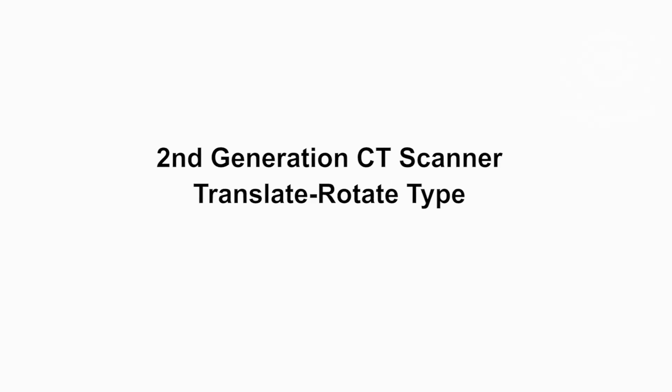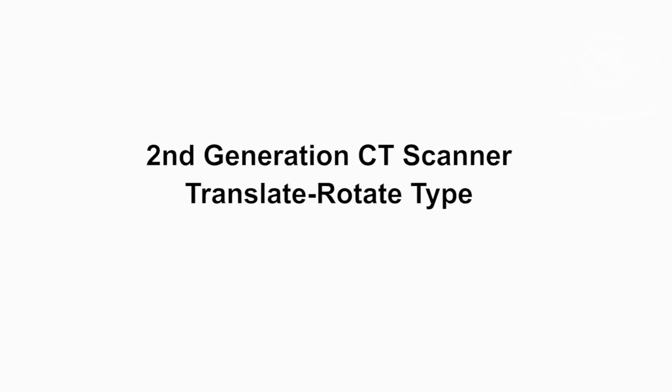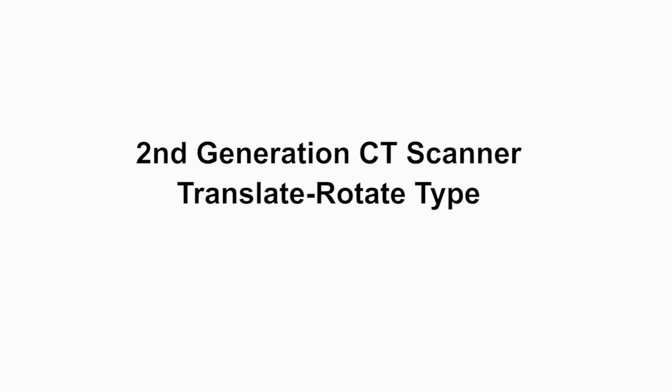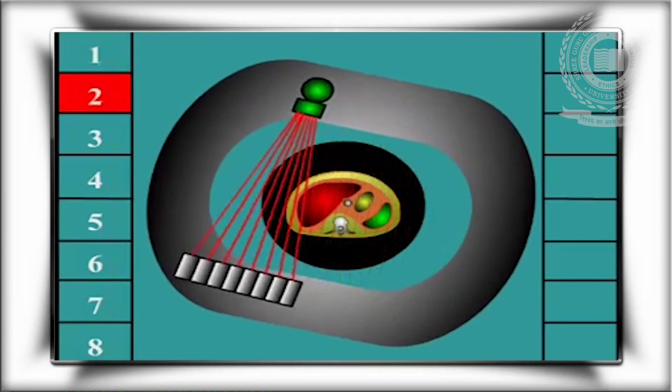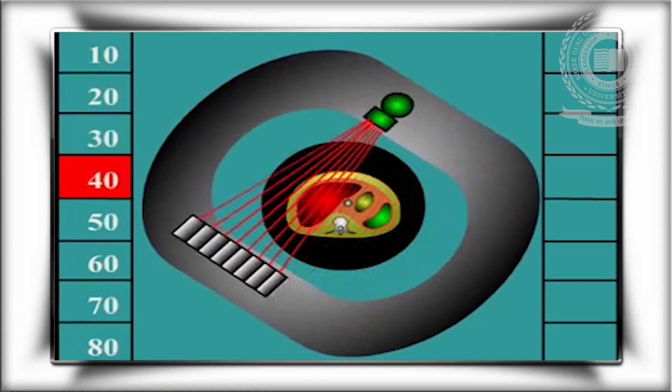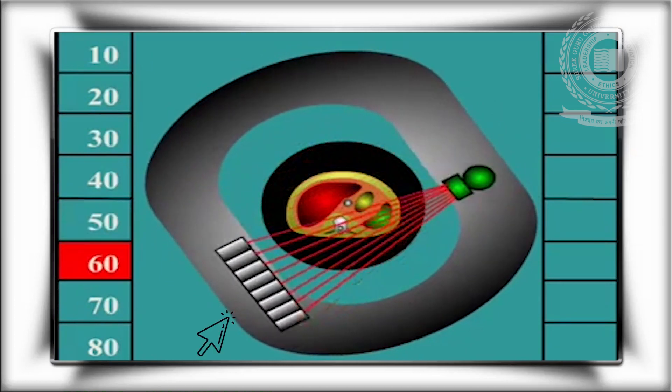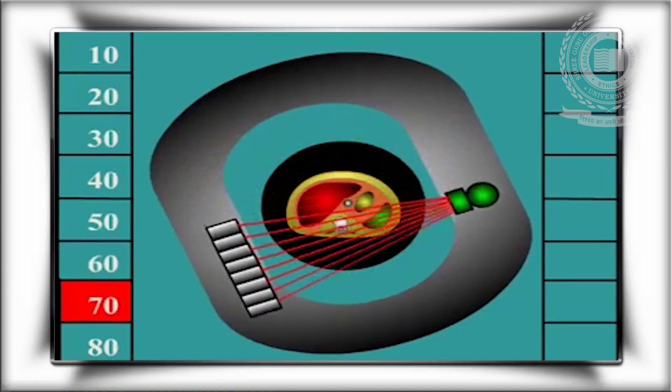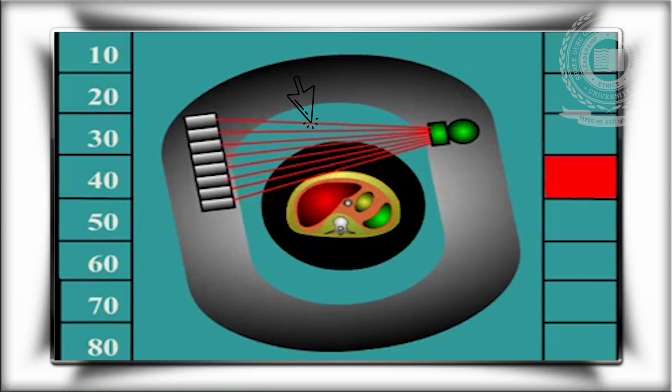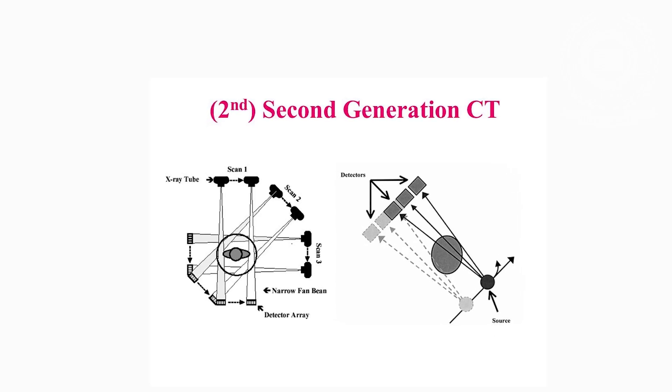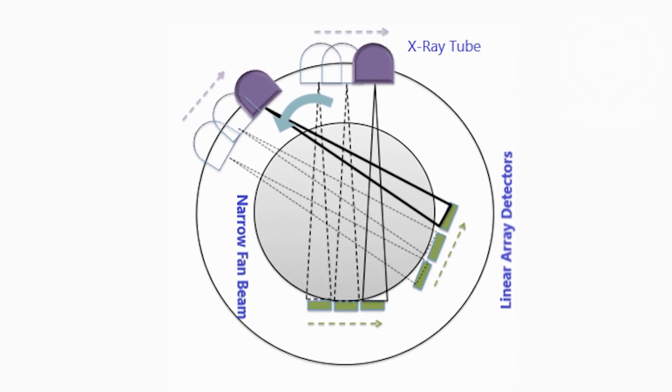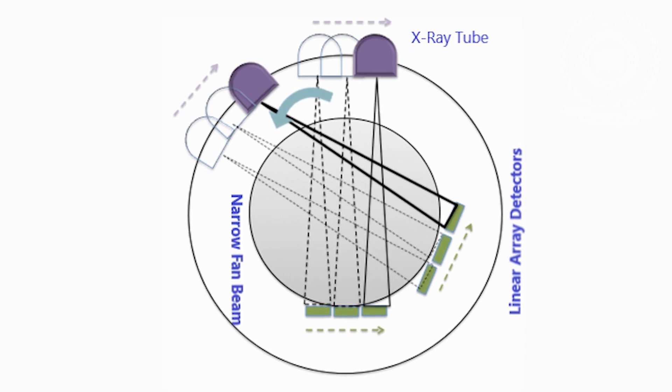Now we come to second generation. This generation was almost similar to the first generation, that is translate-rotate type, but the new feature of this equipment was the use of multiple detectors in a linear geometry and narrow fan beam of X-rays. Due to multiple detectors and narrow fan beam of X-rays, the image quality got improved.